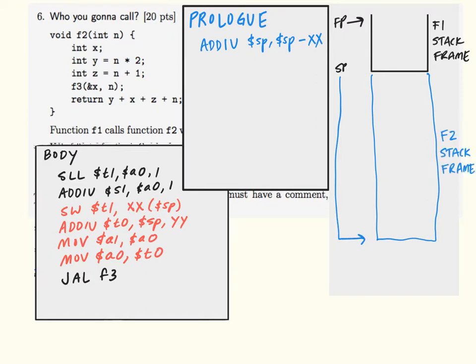The next order of business is saving the return address onto the stack. We'll use a store word, and we're going to store the return address somewhere on the stack. Now this somewhere is in fact going to be the very bottom of the F2 stack frame. But since we don't yet know how big the stack frame is, we can't include the offset in the MIPS instruction just yet.